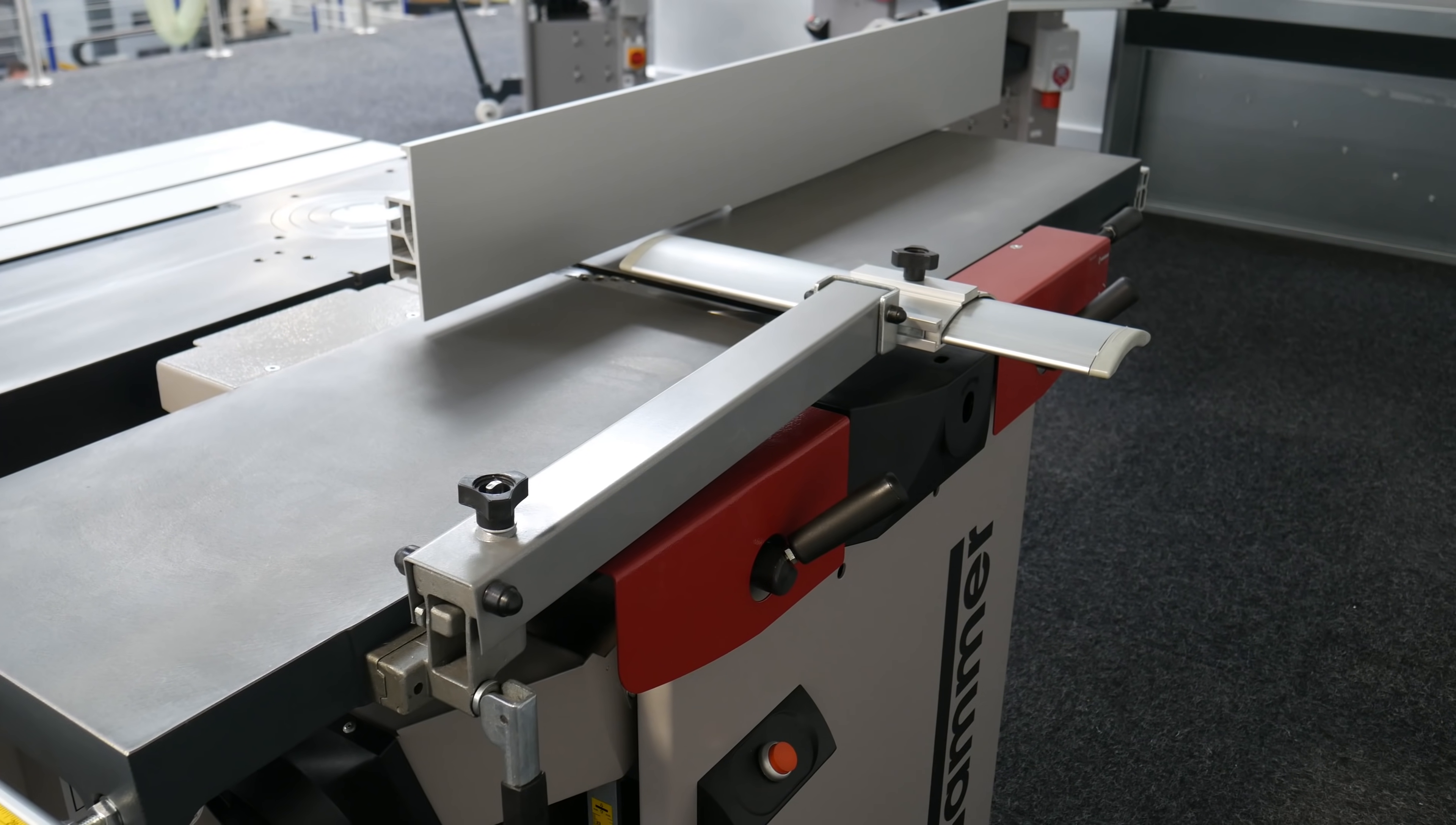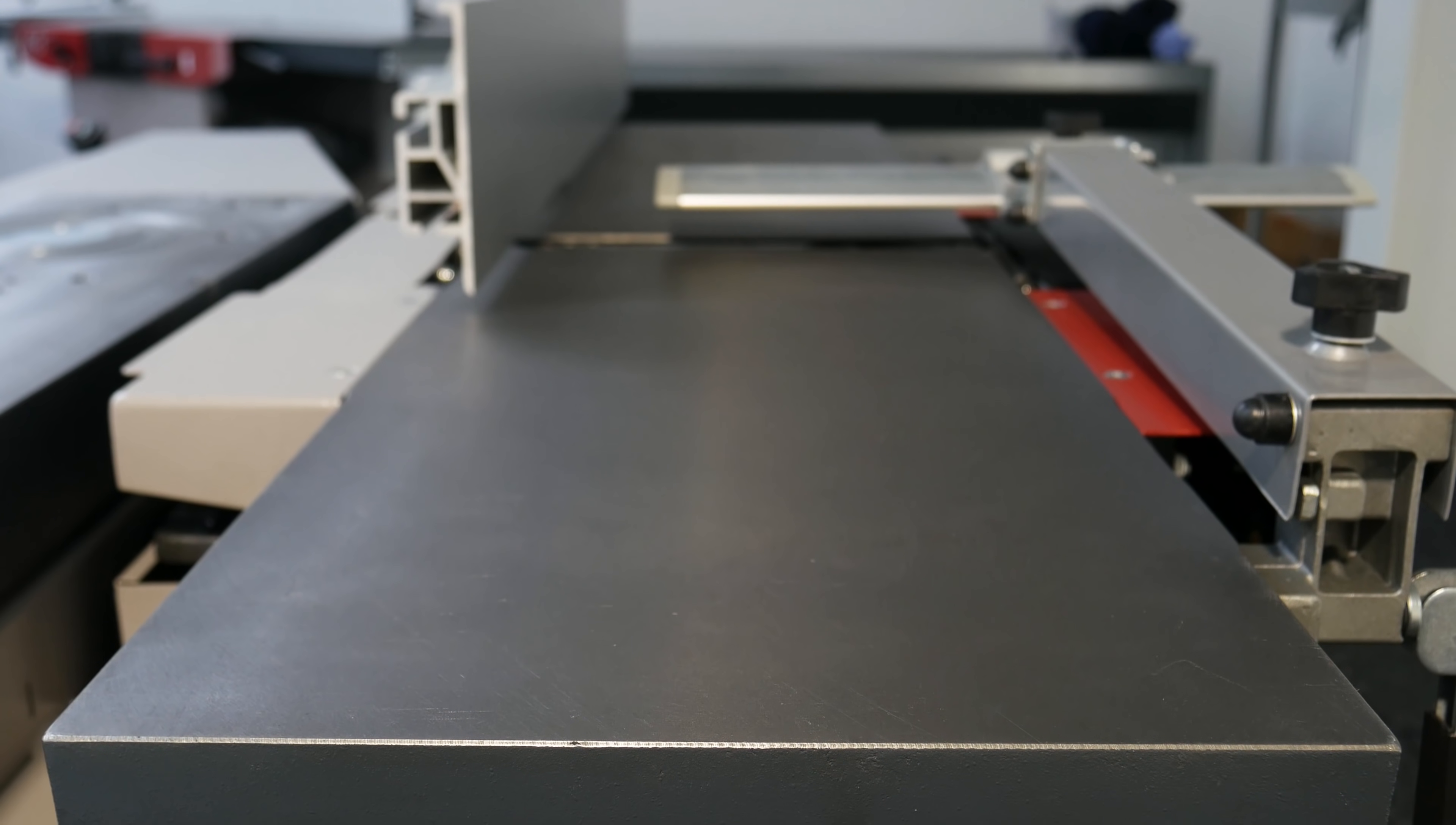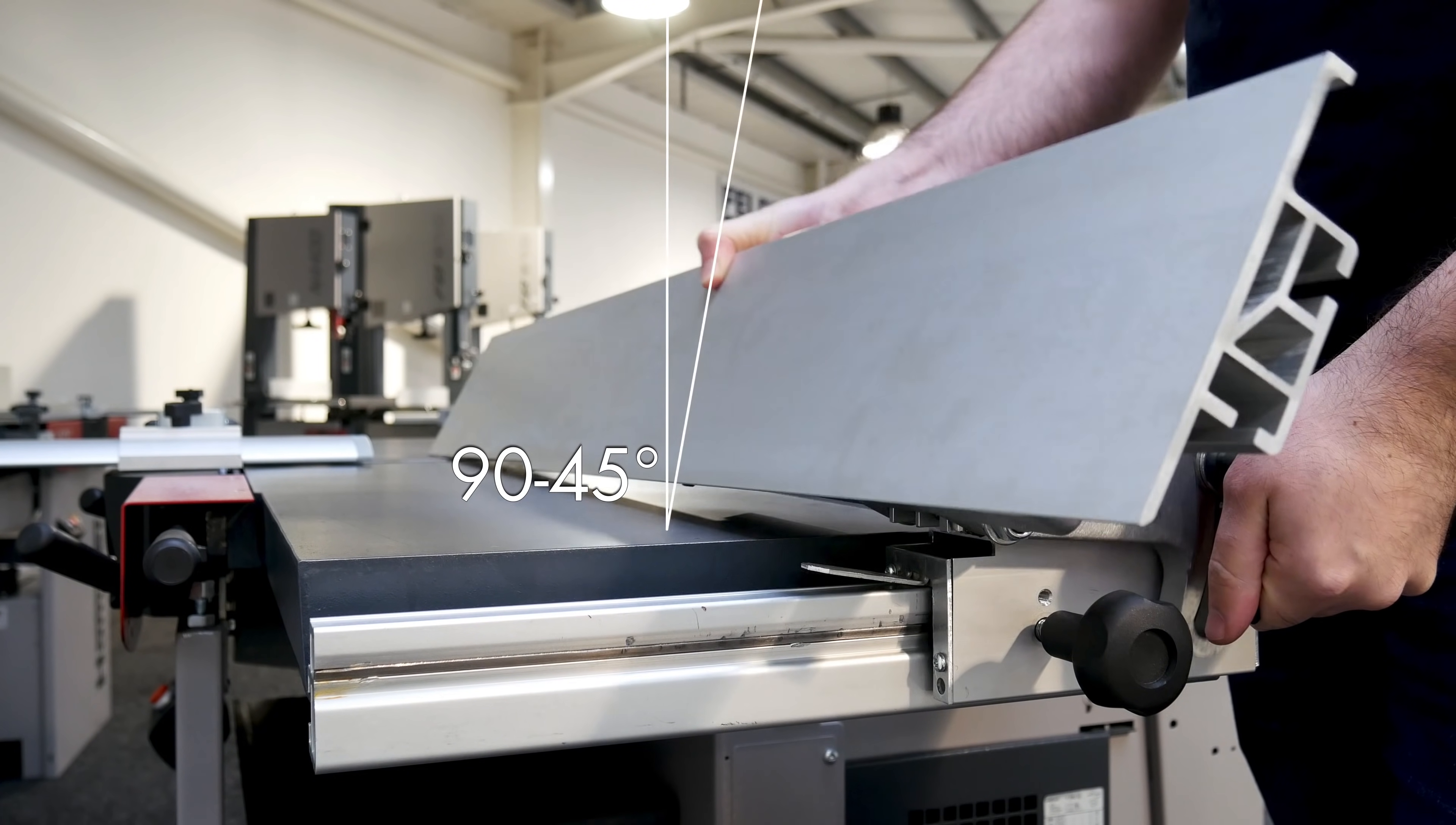The surface planer has a solid cast-iron table for consistently accurate results that has a length of 1,400mm and a planing width of 310mm. The anodised planer fence allows for smooth processing of workpieces and can be tilted from 90 to 45 degrees.